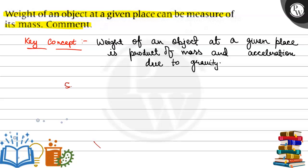So, mass is constant but weight of object varies when acceleration due to gravity varies.